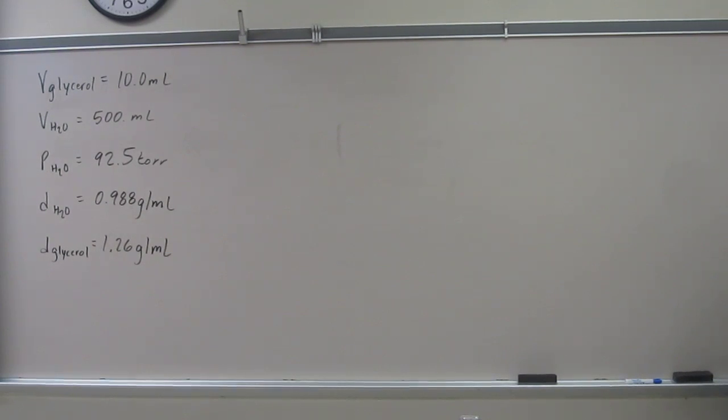This problem says, since we're using Raoult's Law, calculate the vapor pressure lowering and the final vapor pressure when 10 mils of glycerol, which is C3H8O3, is added to 500 mils of water at 50 degrees Celsius. At this temperature, the vapor pressure of pure water is 92.5 torr, and its density is 0.988 grams per mil. The density of glycerol is 1.26 grams per mil.